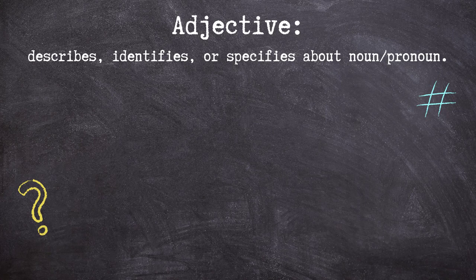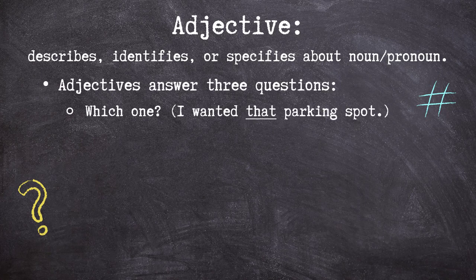An adjective describes, identifies, or specifies something about a noun or a pronoun. Adjectives answer one of three questions. The first is: which one? As in, 'I wanted that parking spot.'